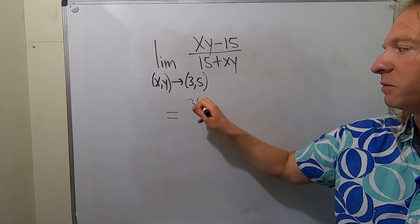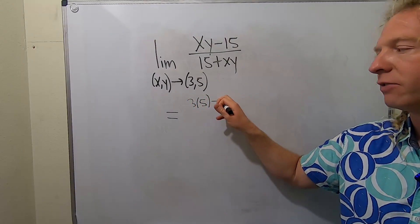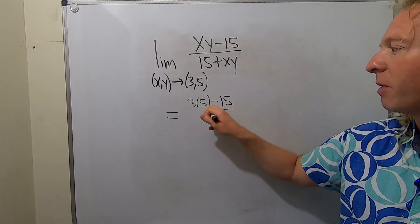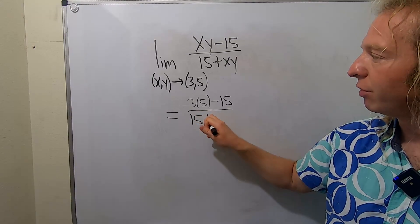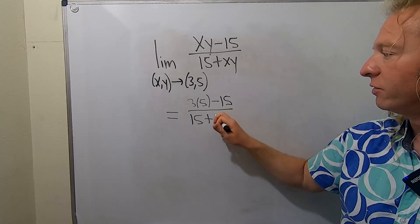So 3 times 5 minus 15, then on the bottom we have 15 plus 3 times 5. So 3 times 5, yep everything looks okay.